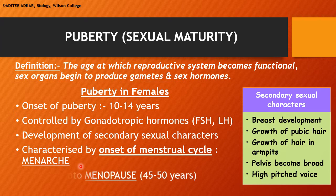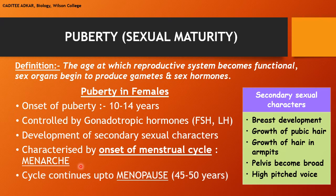The menstrual cycle continues in the female body up to an age of around 45 to 50 years and then it stops. This stopping of the menstrual cycle is known as menopause. The time period from menarche to menopause is the period when a woman can reproduce naturally, and this is known as the reproductive period or reproductive age of the woman.